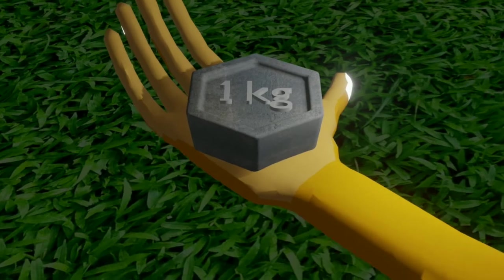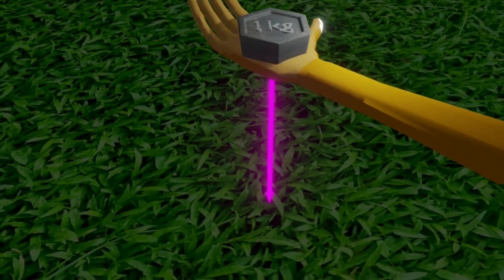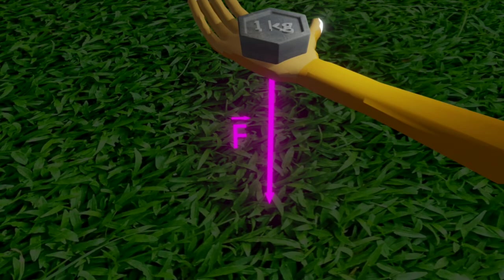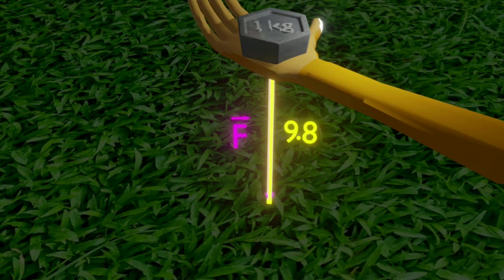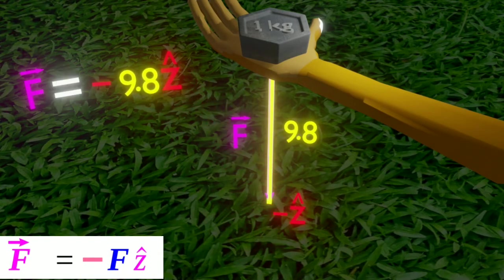For example, let the gravitational force acting on a one kilogram object be F. This vector F has two parts. First one is its value or magnitude, which is about 9.8 newton. And the second one is its direction, which is downwards, or towards minus cap Z direction.